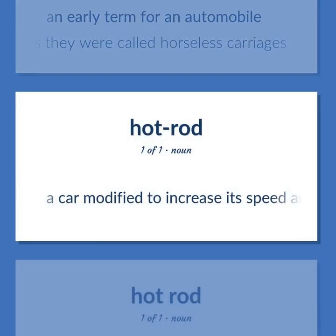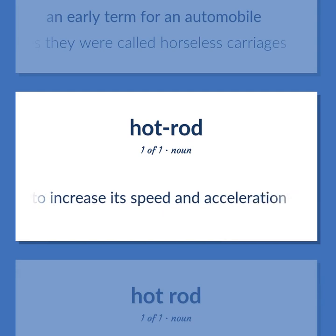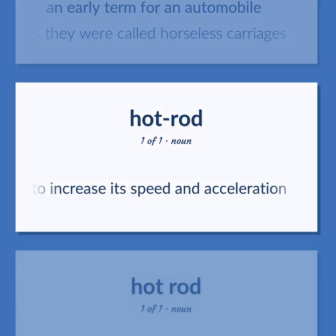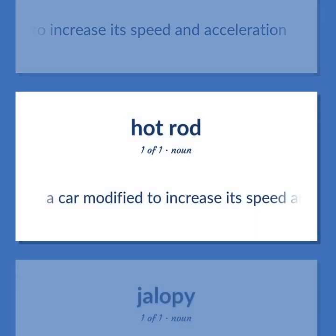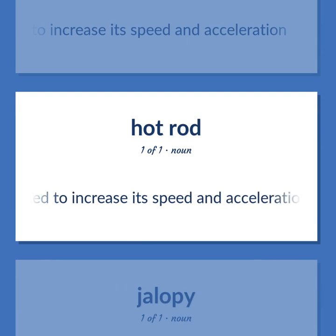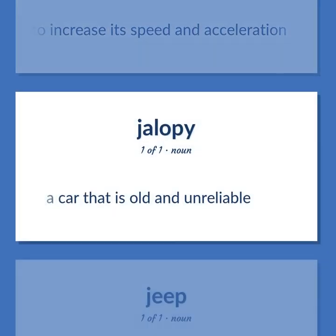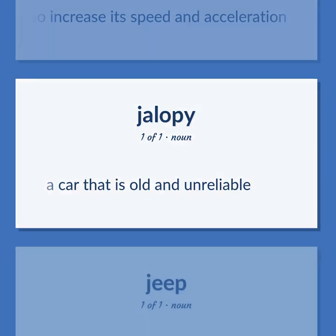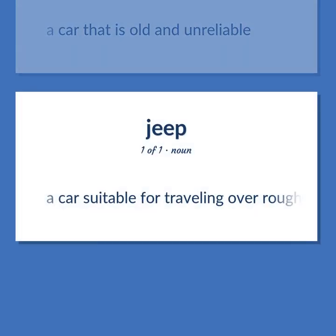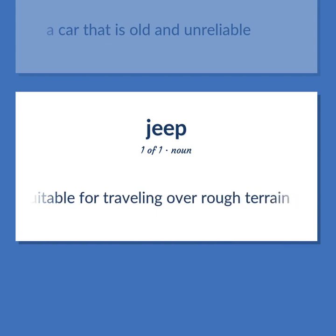HOT ROD: A car modified to increase its speed and acceleration. JALOPY: A car that is old and unreliable. JEEP: A car suitable for traveling over rough terrain.